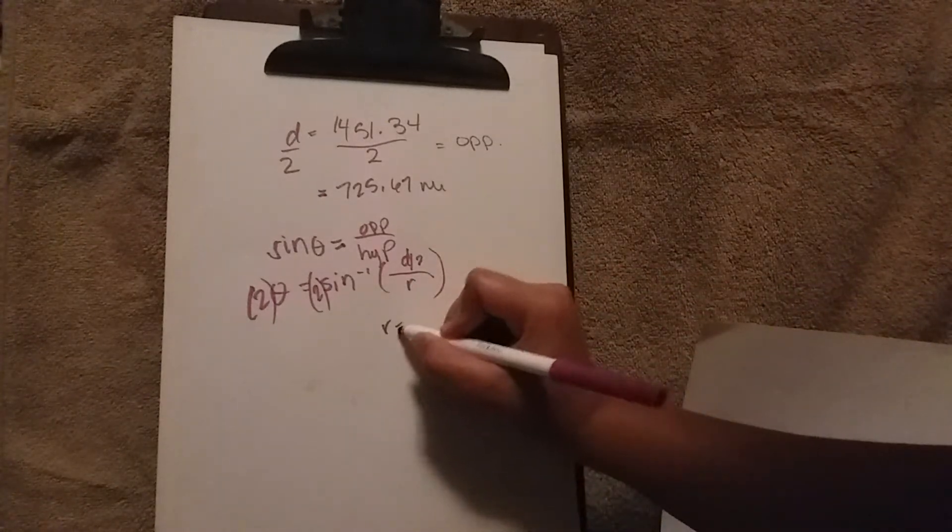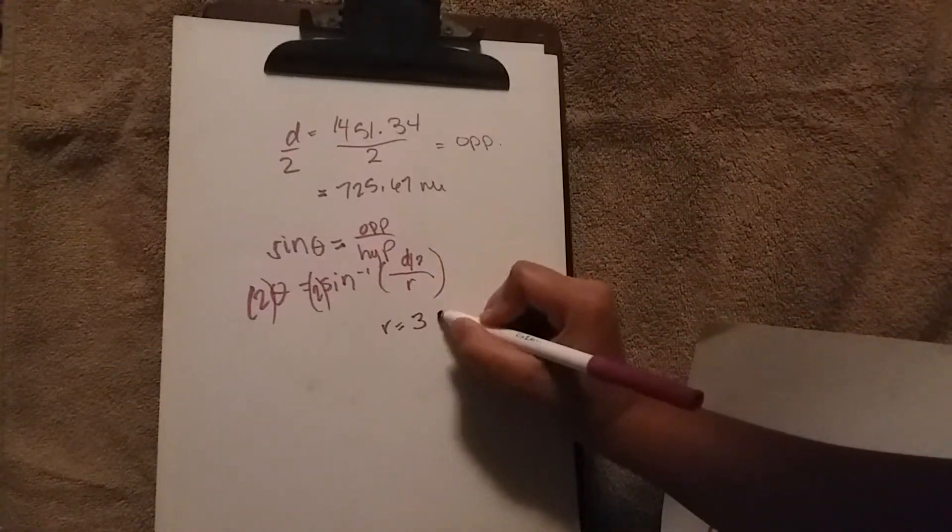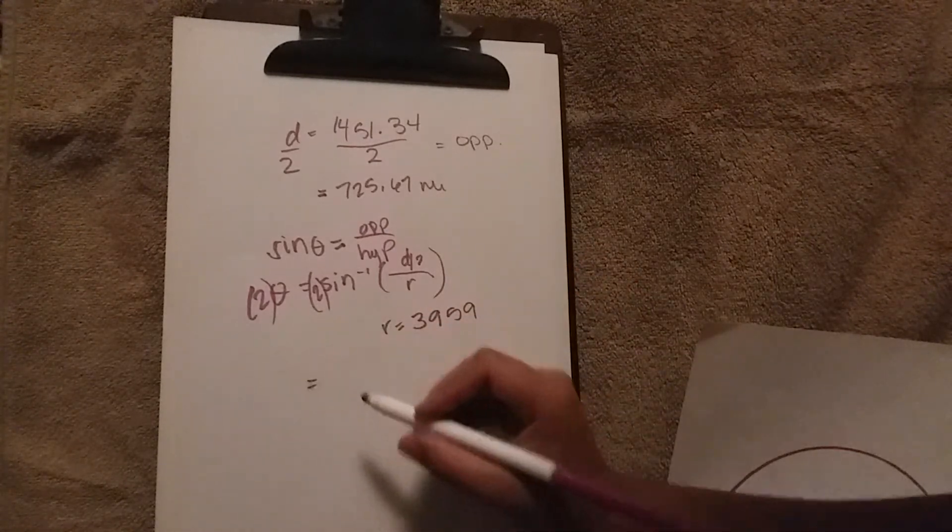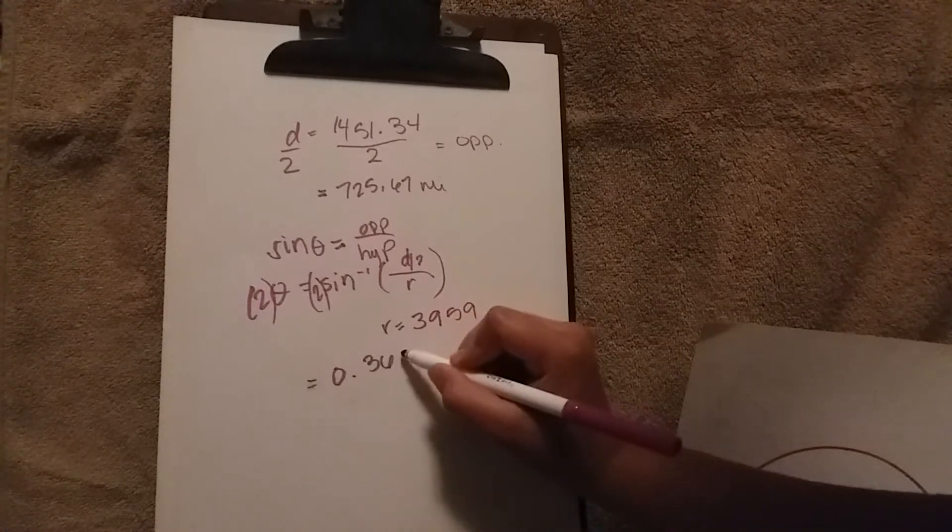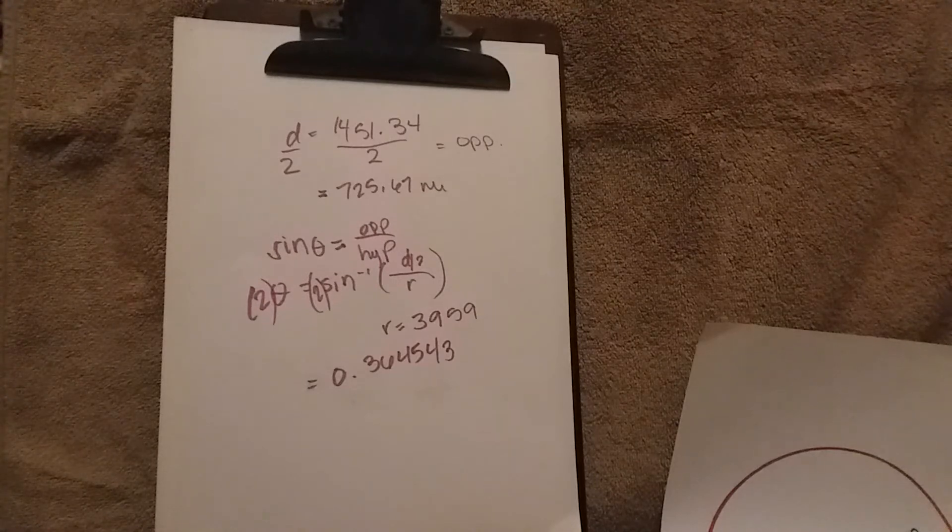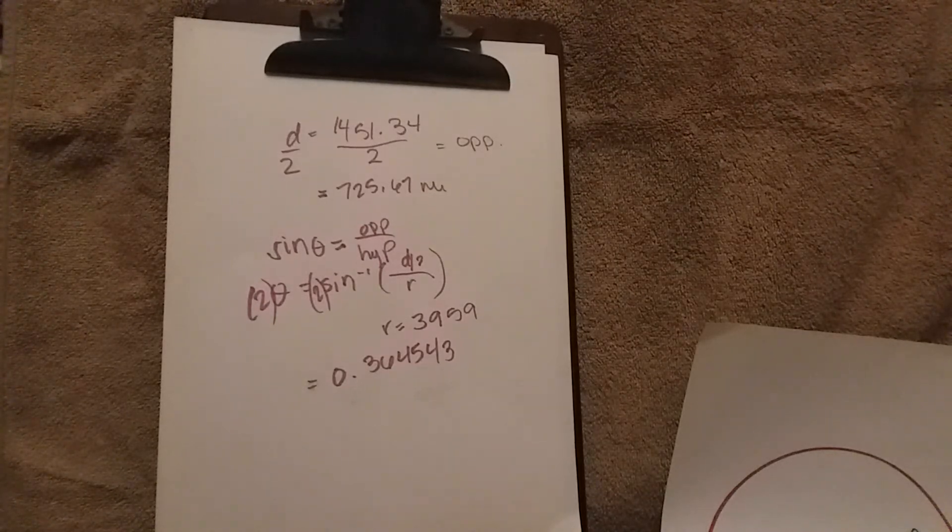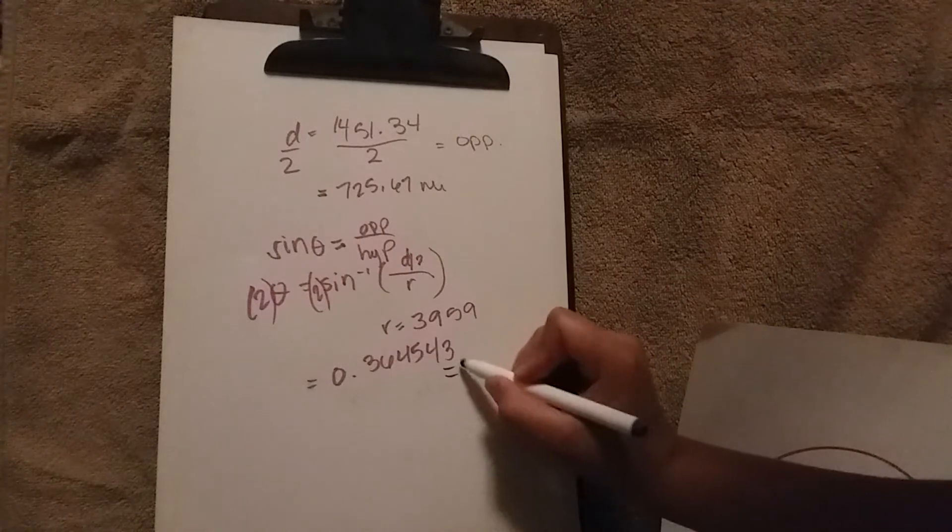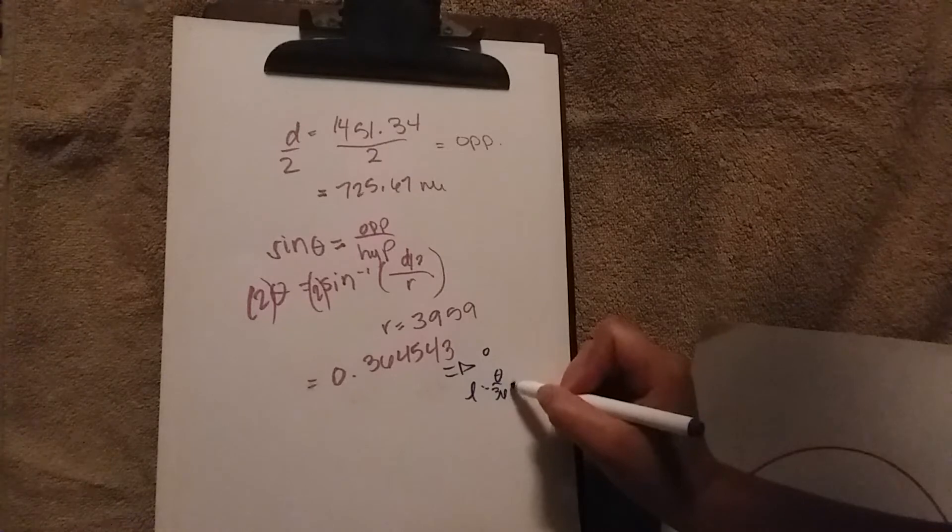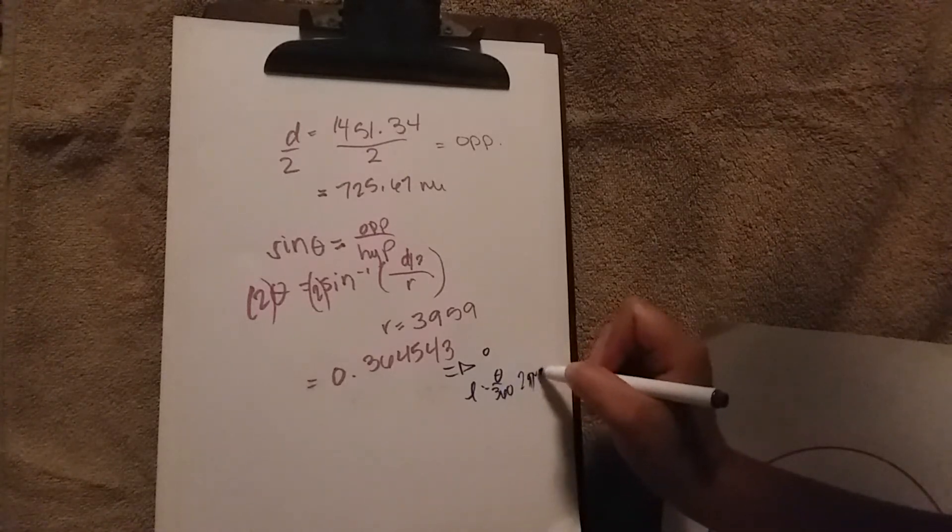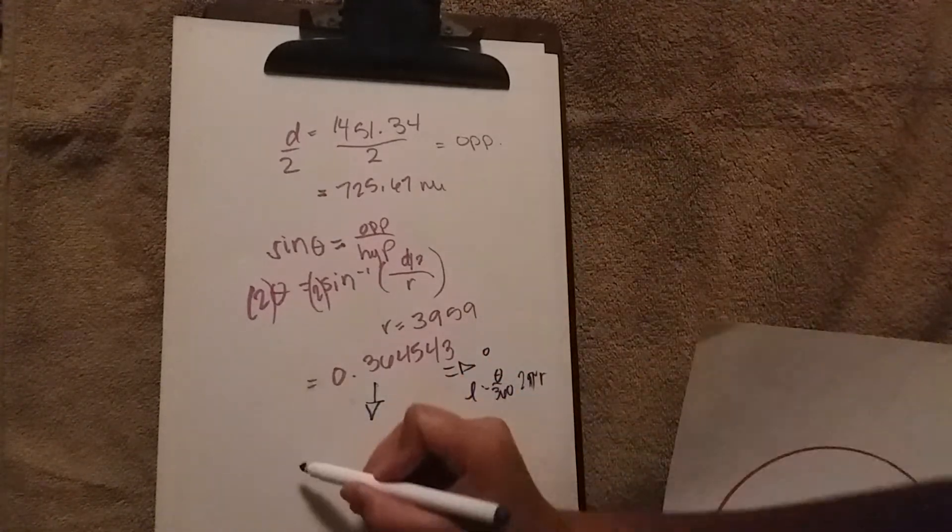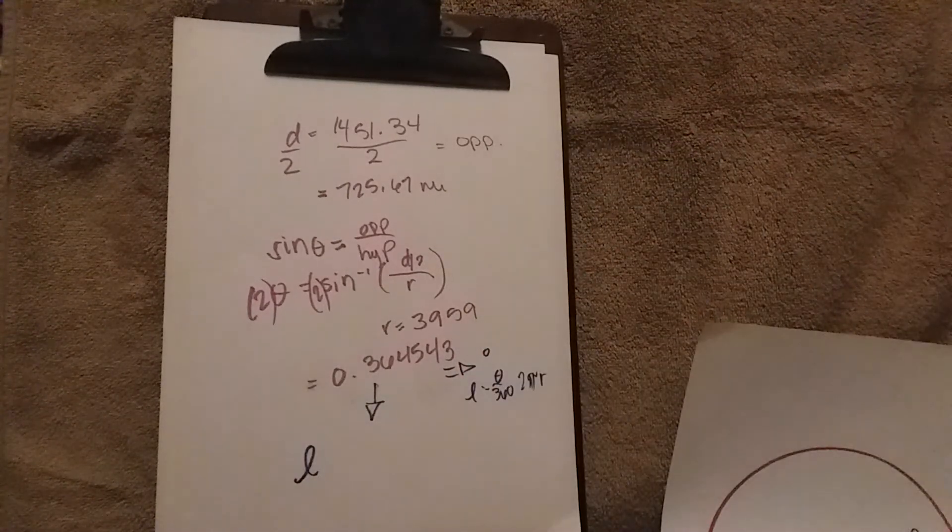Here I used the radius is equal to 3959, and when calculated, gives a radian value of 0.364543. At this point, you can do one of two things. You can convert it back to degrees and use the formula we discussed in class, or you can leave it in radians and use this novel arc length formula.